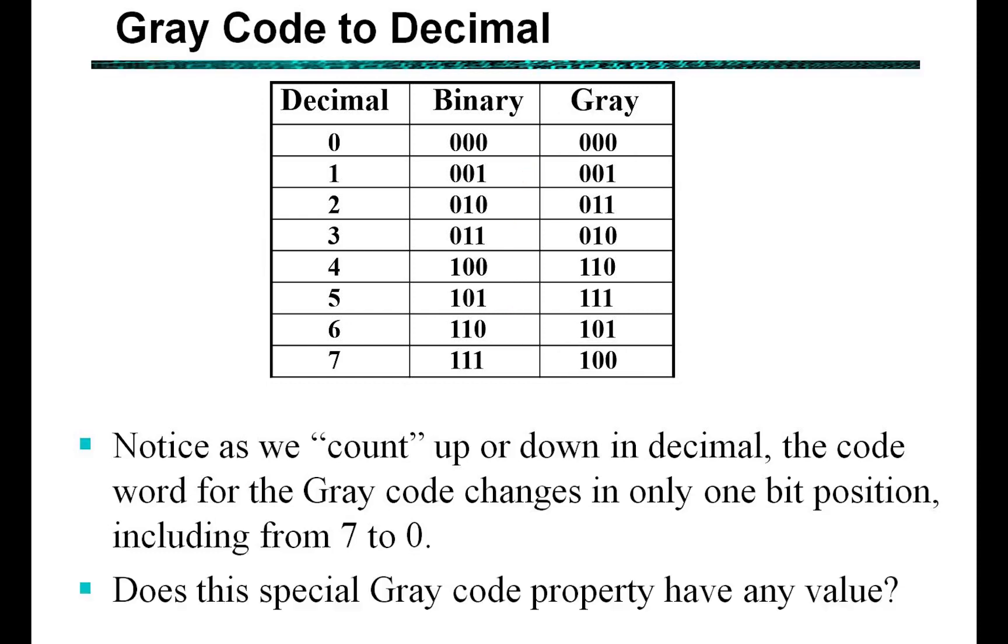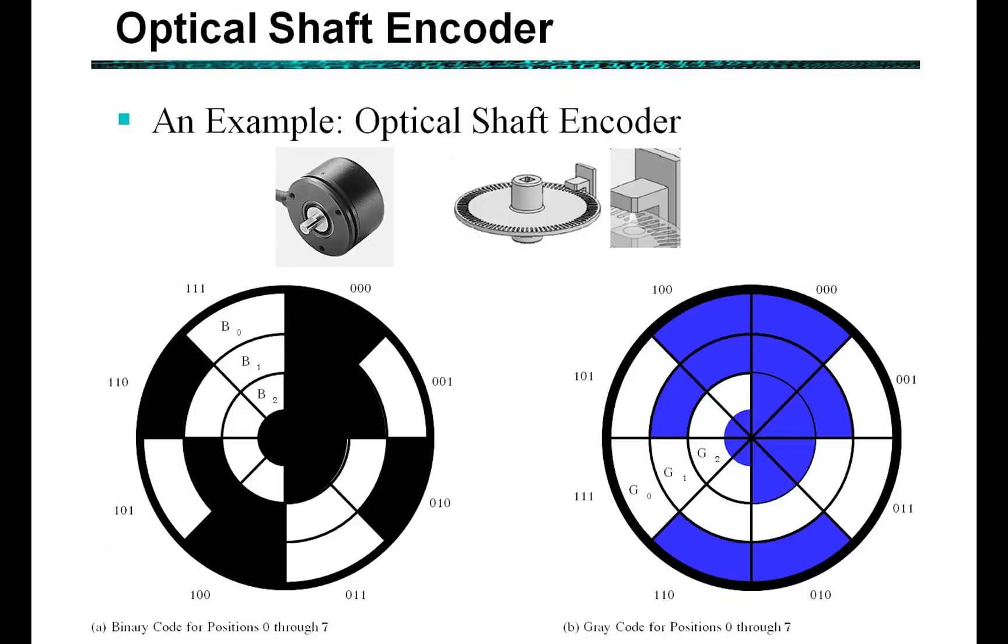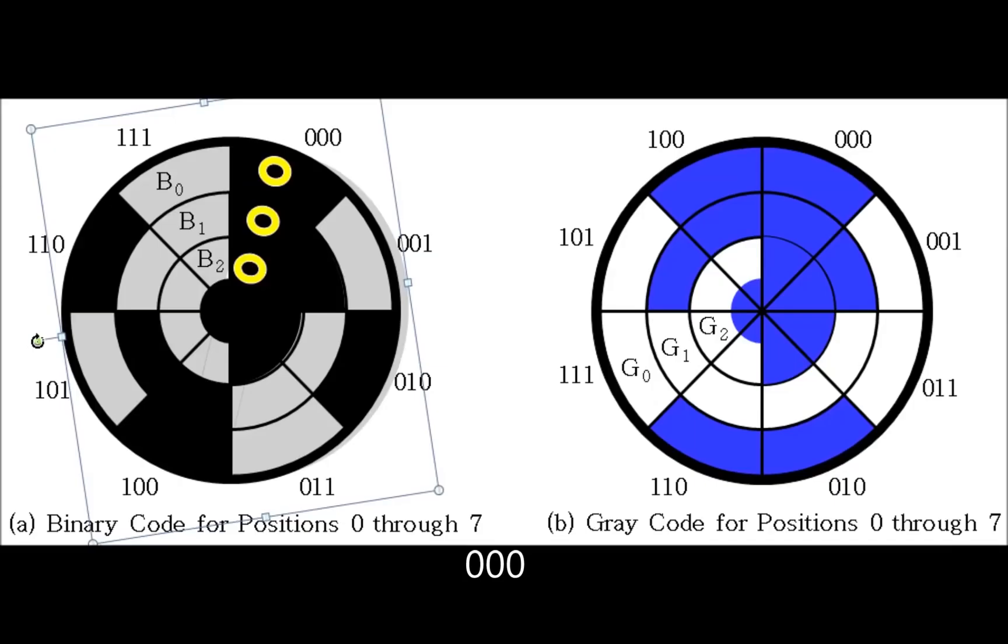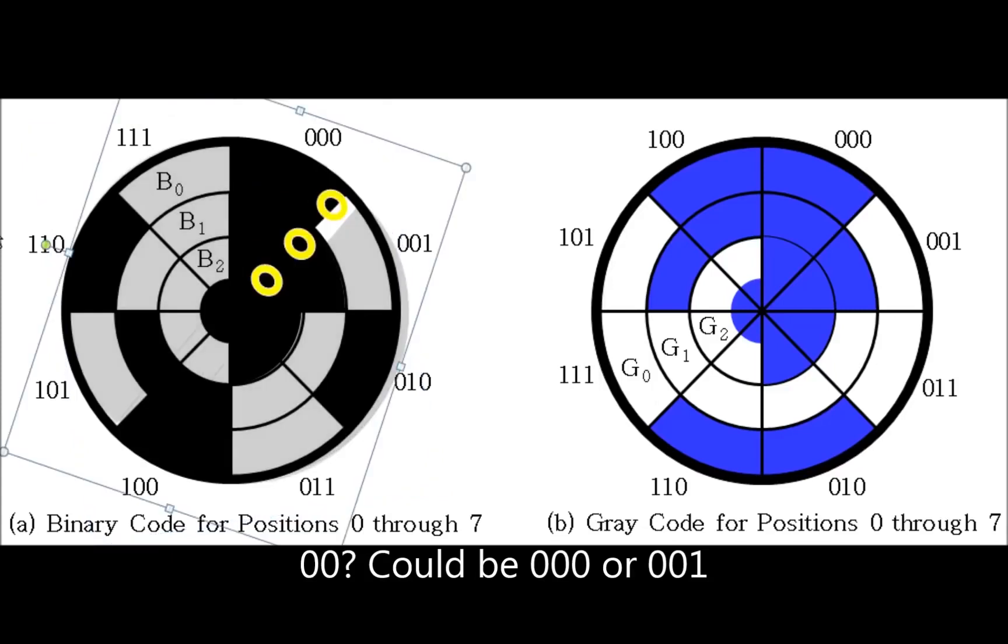Then the question really is, does this special grey code property have any value for us when we're thinking about the shaft encoder? So if we look back carefully at this shaft encoder, we can see that as the light source and sensor is rotated relative to the encoder disk from the 000 position, we notice that when it transitions between 000 and 001,